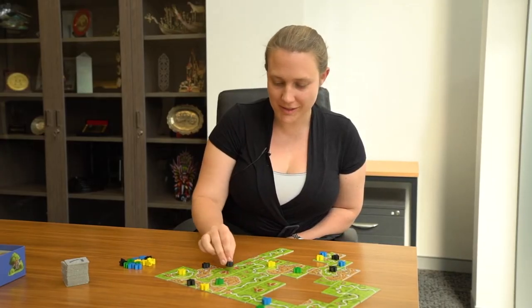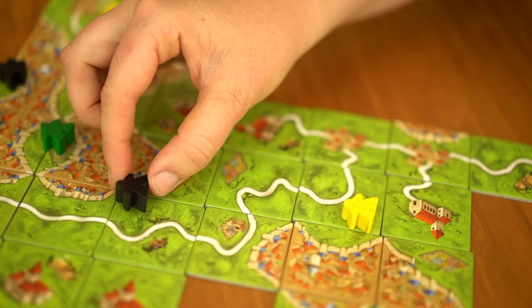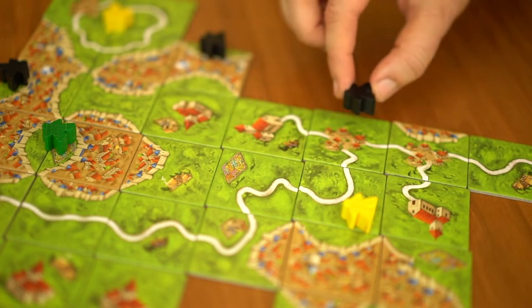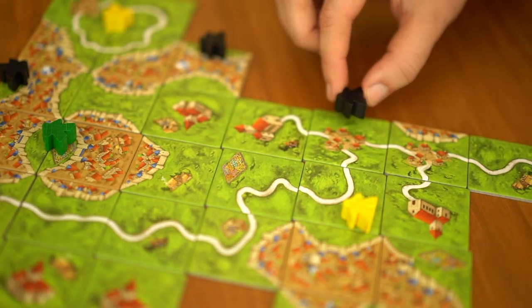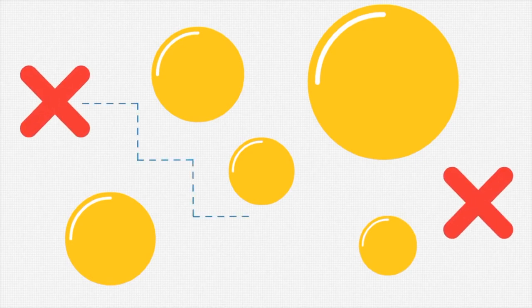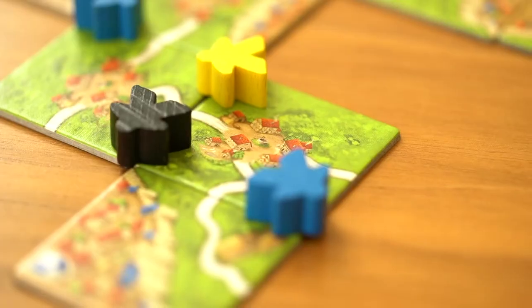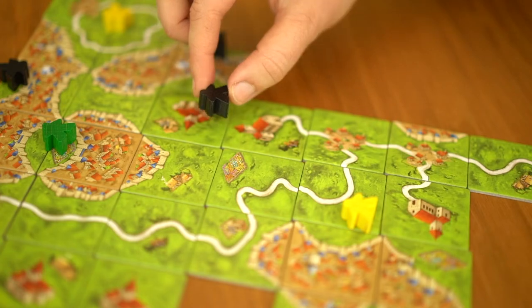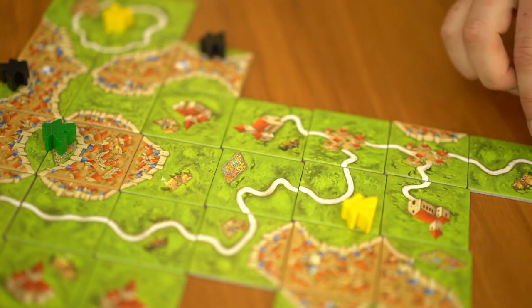In Carcassonne, a farming region is a set of points such that you can move your meeple within the set of tiles from any one point to any other point. In mathematics, a path connected component is a set of points such that between any pair of points there exists a path between them. It's the same thing.